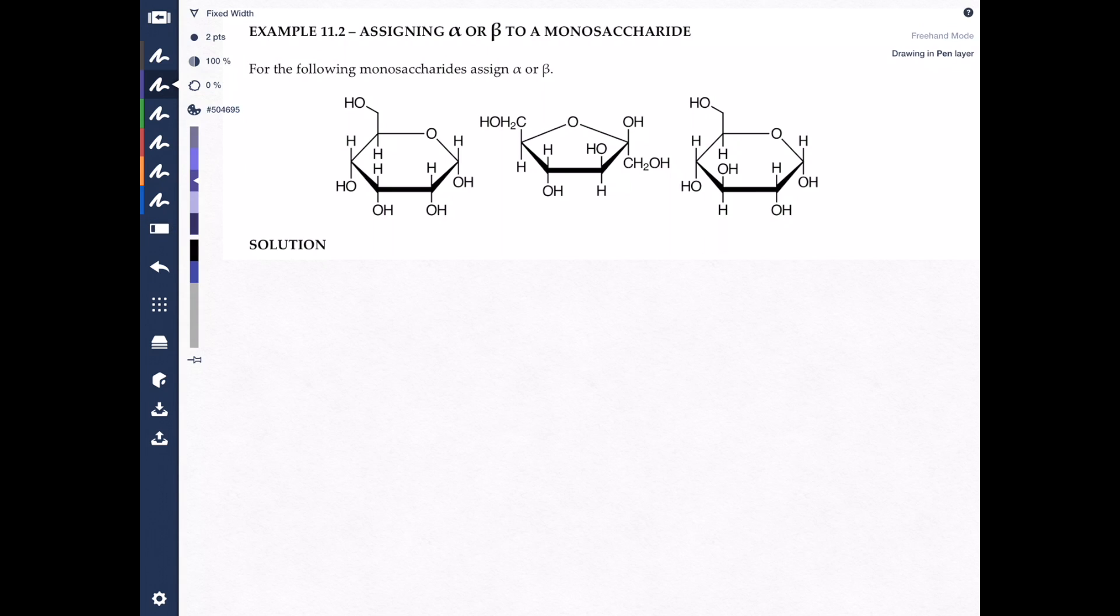once you've found the anomeric carbon, then we have to decide if it's alpha or beta. Now, to decide alpha versus beta, you simply look at the OHs that are attached. Now, you find the anomeric carbon, you find the OH, and find its direction.